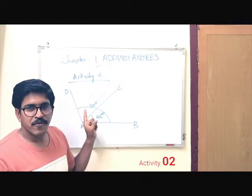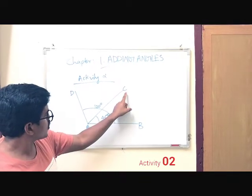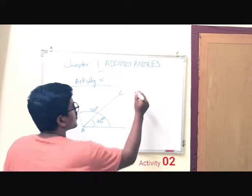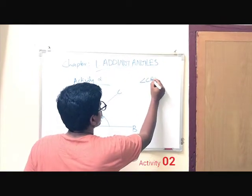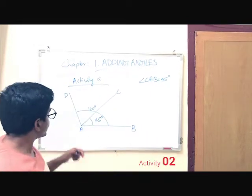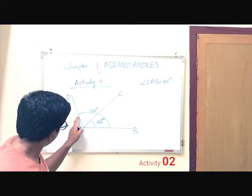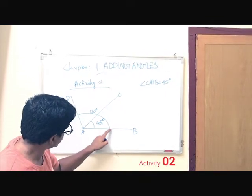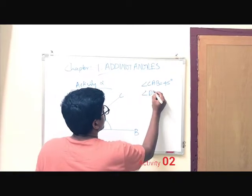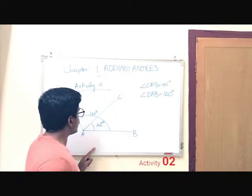Here also we have to find out all the measurements from the figure. You can clearly see angle C, A, V is equal to 45 degrees. And another angle here is angle D, A, V — the indicator shows from here to here — so angle D, A, V is equal to 120 degrees.